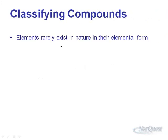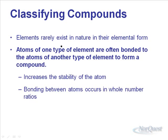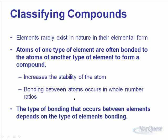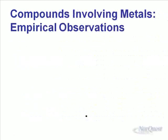When it comes to compounds, this is how compounds are made. Elements rarely exist in nature in their elemental form because only the noble gases are really happy with the number of electrons they have. Every other element is either trying to gain or lose electrons to become stable. By gaining or losing electrons, it becomes more stable, and in doing so it ends up forming bonds. Bonds between atoms occur in whole number ratios, and the type of bonding depends on the type of elements that are bonding.